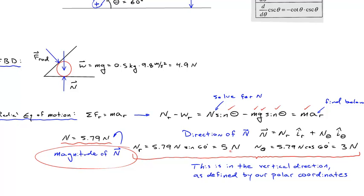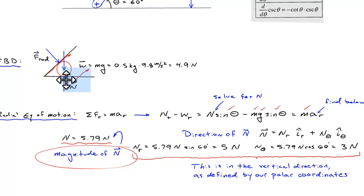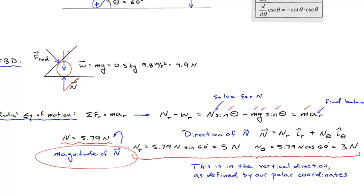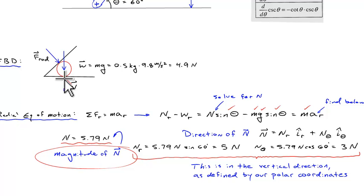Working the geometry: there are five newtons acting in the radial direction, and the radial direction is in this direction. There's a component of the normal force acting in the radial direction and a component acting in the theta direction — three newtons in the theta direction. So it would line up in the positive theta direction, and the sum of these two components would put us in a vertical orientation. So there's five newtons acting in the radial direction for the equation of motion.